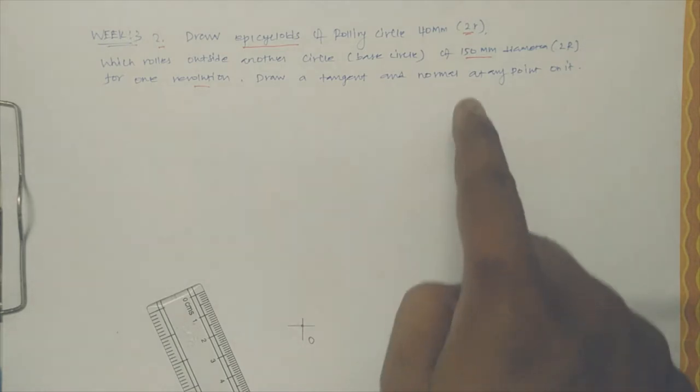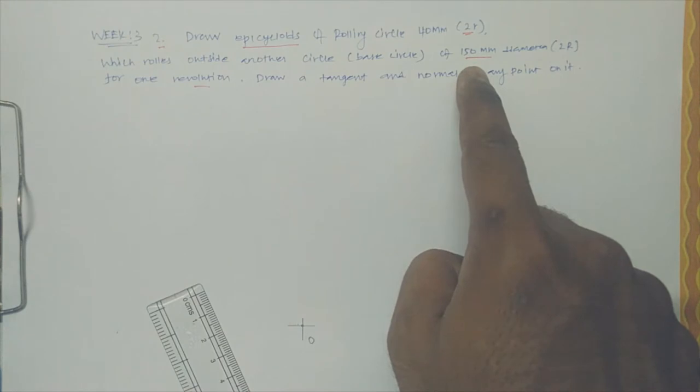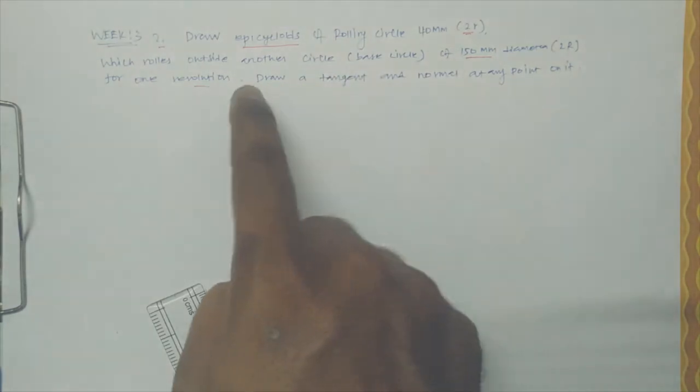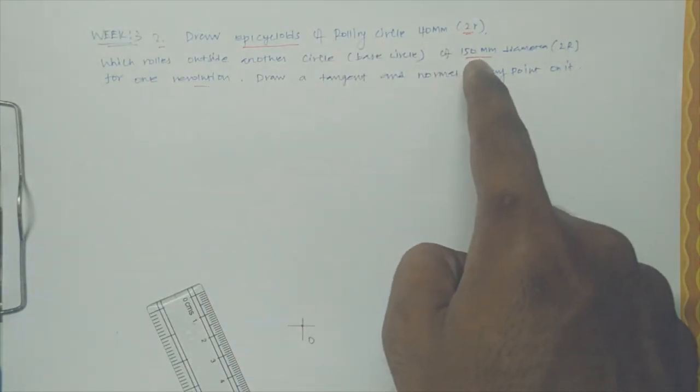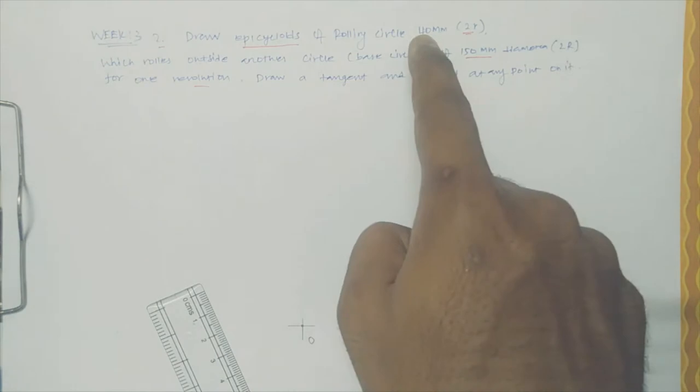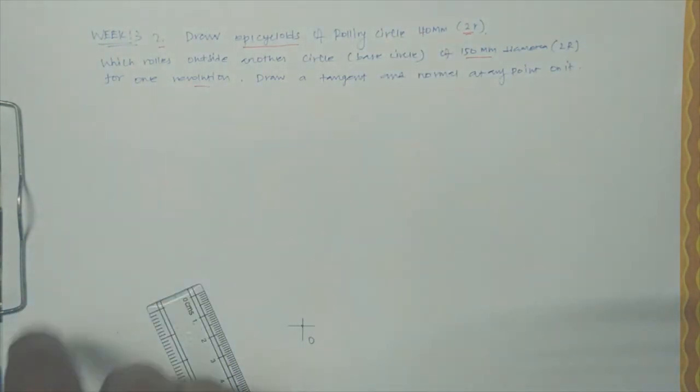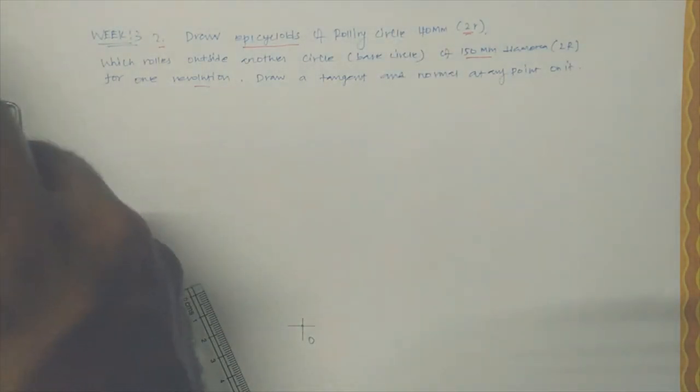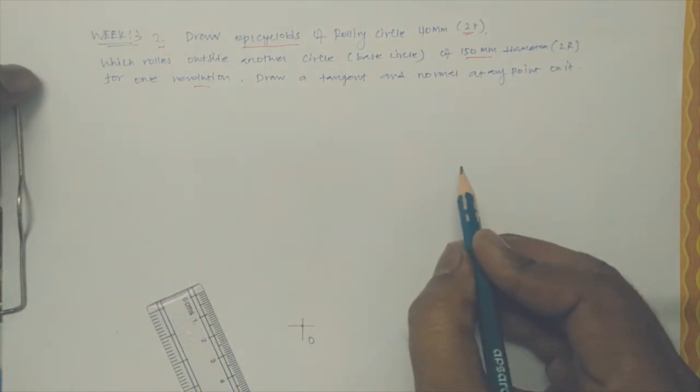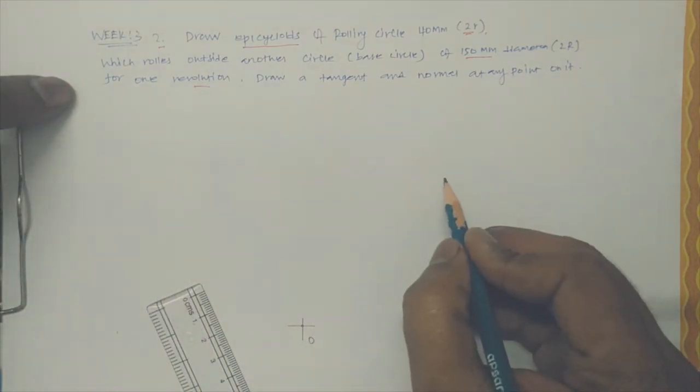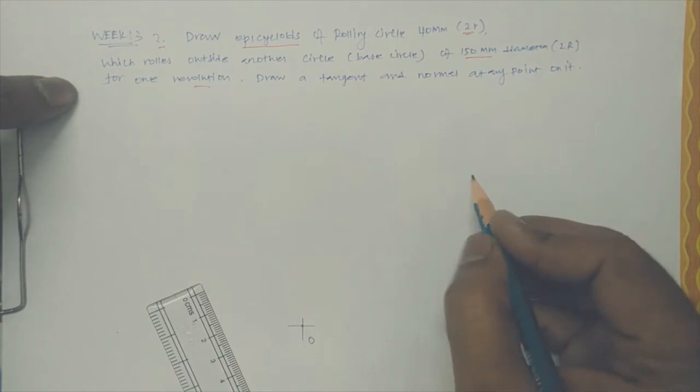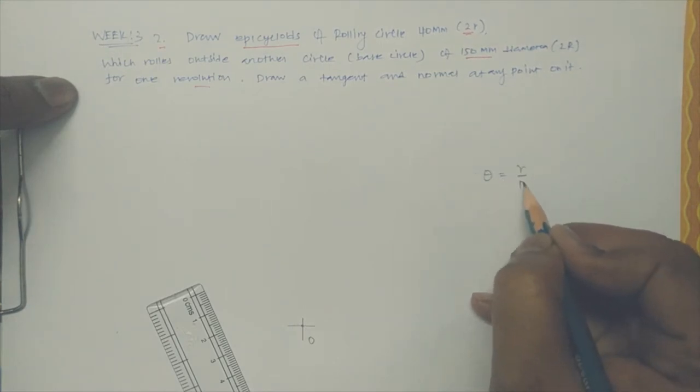If you're looking here, 150mm is the diameter of the base circle and 40mm diameter is the rolling circle. So to identify some interior angle which is required...